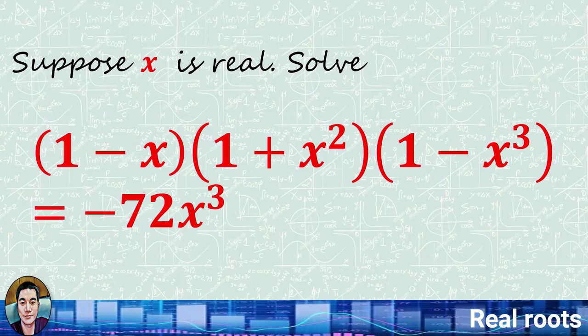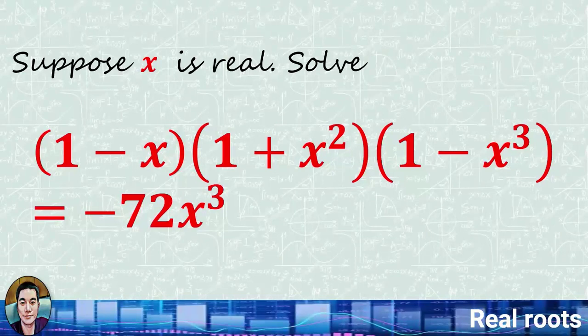Today, let's consider this interesting and challenging question. Suppose x is real, you're asked to solve the following equation: 1 minus x times 1 plus x squared times 1 minus x cubed equals negative 72x to the power 3. Pause the video now if you wish to solve it, and keep watching once ready.